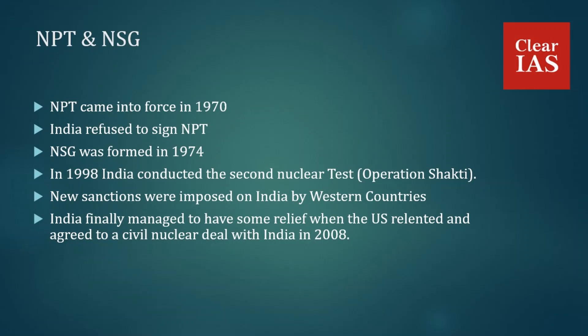Another reason India refused to sign the NPT is that no fixed timelines have been mentioned for disarmament. Additionally, the NPT is considered an unfair treaty, as nuclear weapon states have no obligation to give up their weapons while non-nuclear states are not allowed to have them. India conducted its first nuclear test at Pokhran in 1974, called 'Smiling Buddha.' The nuclear powers became convinced that the NPT alone would not halt the spread of nuclear weapons, and consequently the NSG was formed in 1974.